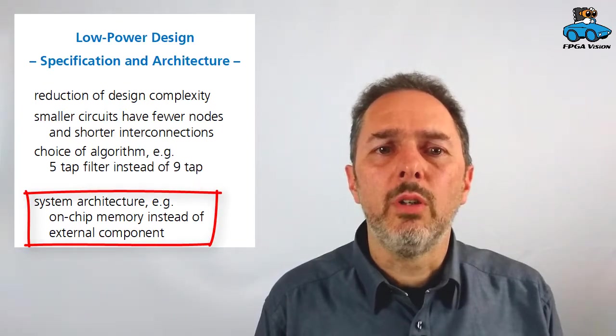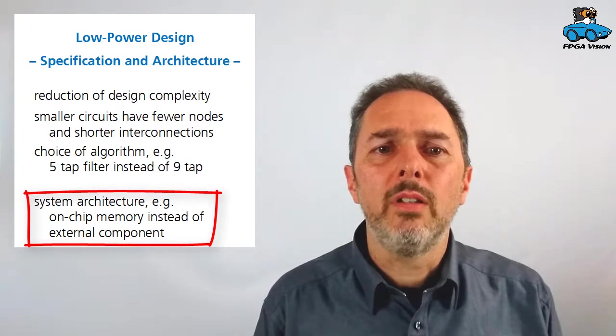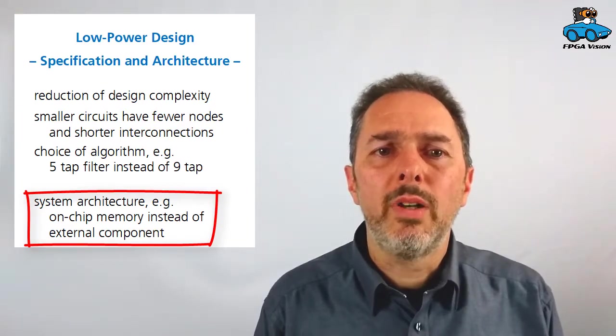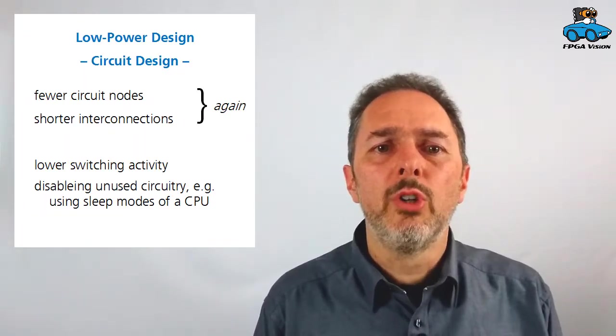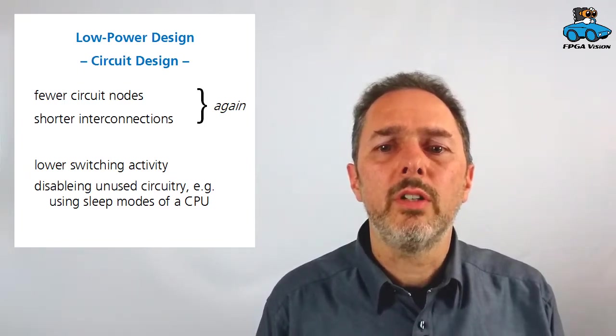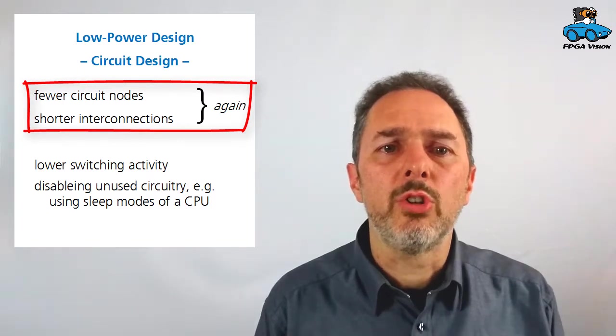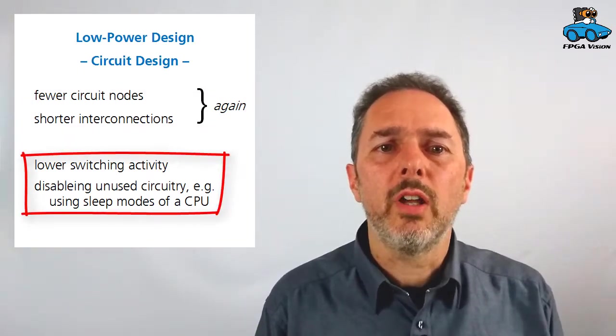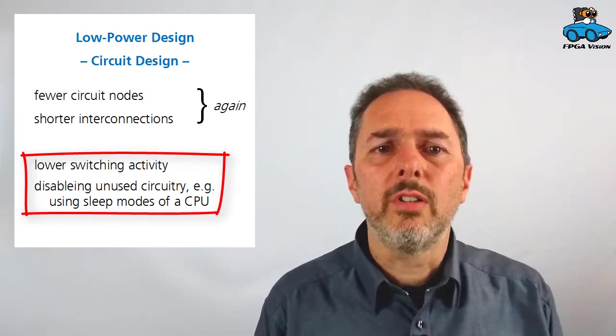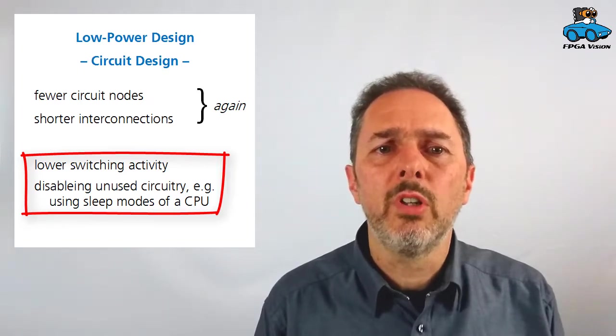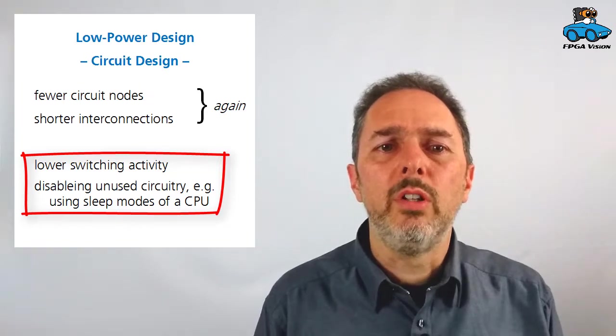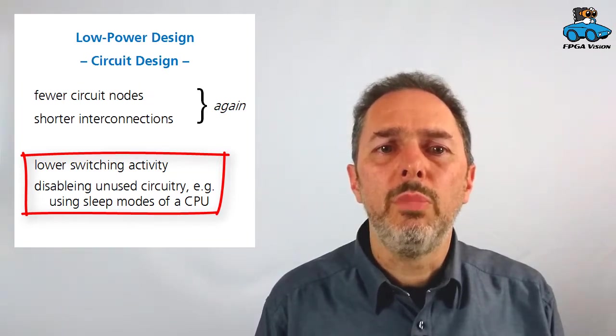And also on the architecture level, you have choices like positioning your memory. If you have an external memory, you have high capacities on addressing this external memory. If you manage to work with only internal memory, you have lower capacities and lower power consumption. The third category of choices you have for power consumption is really at the circuit level, at the circuit design. Again, you can choose circuit design which has fewer circuit nodes and shorter interconnections. But also you could consider switching activity and completely disable circuits that are not used. This is done in modern CPUs which have sleep modes. So if part of a CPU or CPU core is not used, then these CPUs will be totally switched off. All these are options in your design.